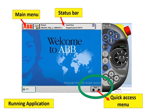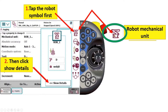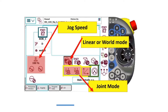The quick access menu provides quick access to change properties for the following functions. This is the robot mechanical unit symbol, and it allows you to choose and access motion modes, choose coordinates and work object. If you click here, then click show details, the coordinates and motion modes are displayed, and you can also change the jog speed here.